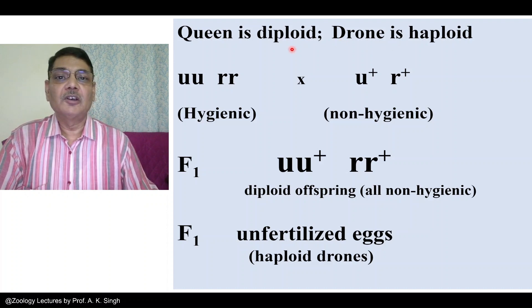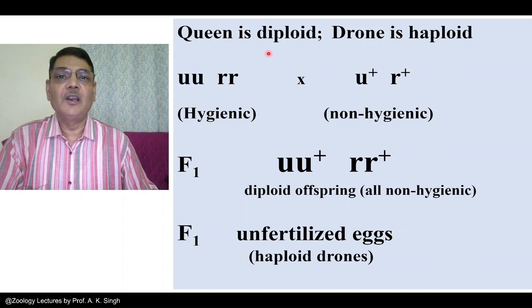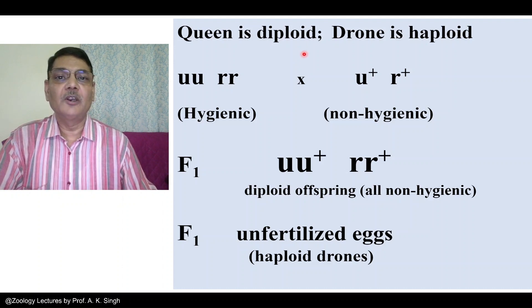The third type of members are workers, which are also diploid but they are sterile — they are not fertile members in the colony. The entire work in the colony will be performed by workers.